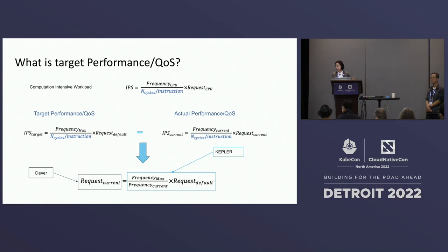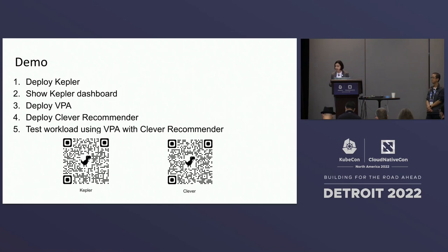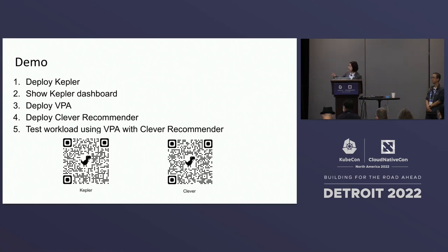This is how Clever derives the targeted request value for your pod to guarantee the same performance. Next, I will show a simple demo on how we deploy Kepler in a cluster, deploy the Kepler dashboard, deploy the Kubernetes default Vertical Pod Autoscaler, and deploy the Clever recommender, then run a testing workload using the default VPA together with the Clever recommender to ensure pod performance. You can scan the barcode to get more detailed information about Kepler and Clever.